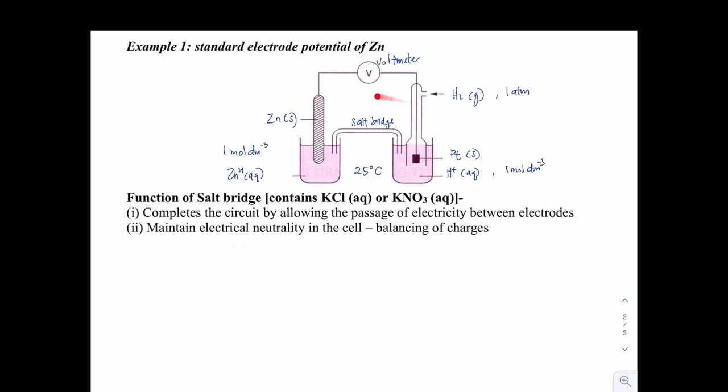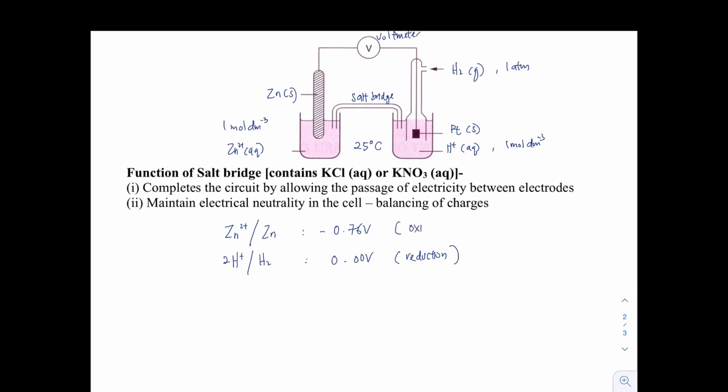If we look at this case, if we check our data booklet, the E⁰ value in the data booklet of zinc to zinc 2+ is negative 0.76 volt. Whereas hydrogen, this electrode potential is 0.00 volt. It shows that when the value is more positive in the data booklet, it favors reduction. Whereas if it is a very negative value, then it favors oxidation.